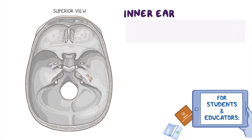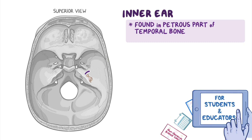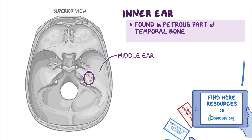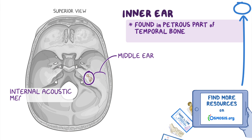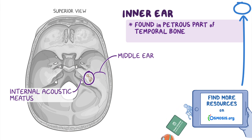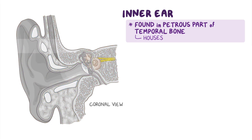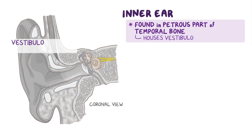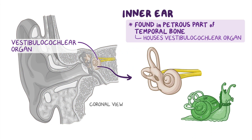The inner ear is found in the petrous part of the temporal bone, between the middle ear laterally and the internal acoustic meatus medially. It is a small and important area which houses the irregularly shaped vestibulo-cochlear organ, which kind of looks like a snail shell attached to a few bony rings.